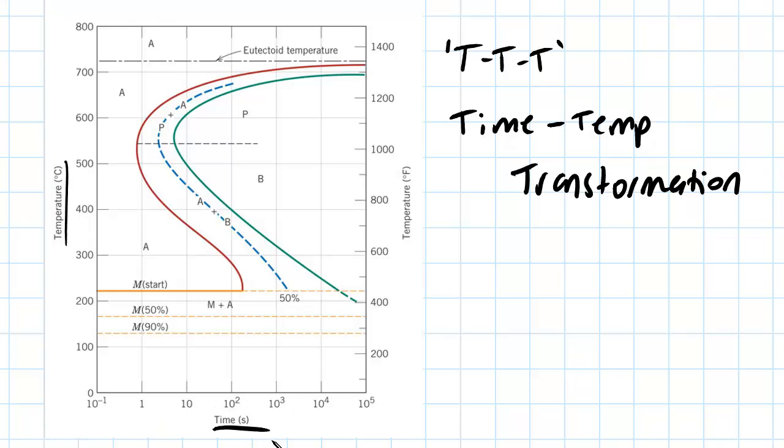And what we're measuring is, for this case, in the case of an iron-carbon relationship, as the temperature changes with varying time, or vice versa, what microstructure are we left with?